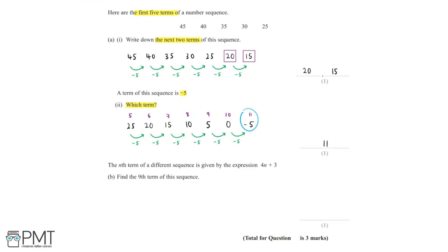Then we're told that the nth term of a different sequence is given by the expression 4n + 3. And in part B, we need to find the 9th term of the sequence. Now to find the 9th term, we're finding the term when n is equal to 9. And so we need to find the value of 4n + 3 when n is equal to 9.